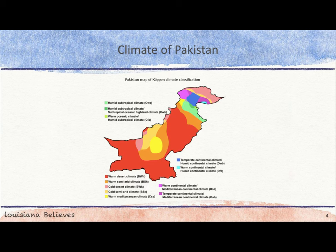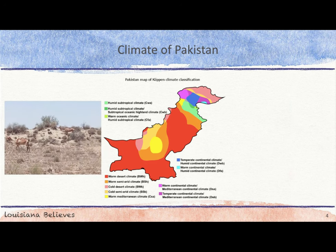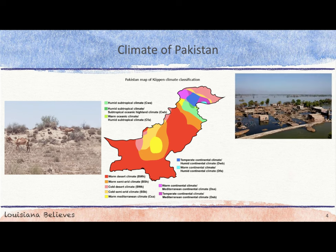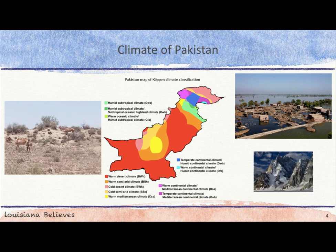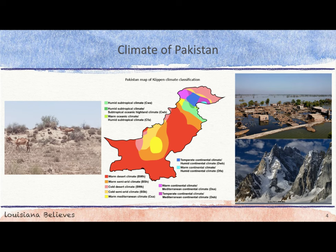Pakistan's diverse landscapes are mirrored in its diverse climates. A large portion of Pakistan is arid and dry. However, during the summer, Pakistan can experience high volumes of monsoon winds and tropical storms from the Arabian Sea. Temperatures across the country range greatly as well. The northern, snow-covered mountains can be extremely cold, while the desert areas can reach extreme heat with temperatures above 100 degrees Fahrenheit.